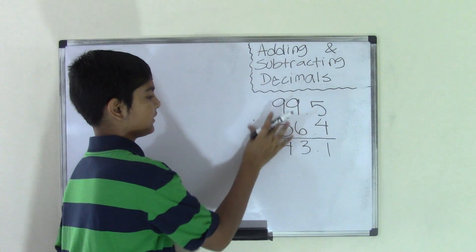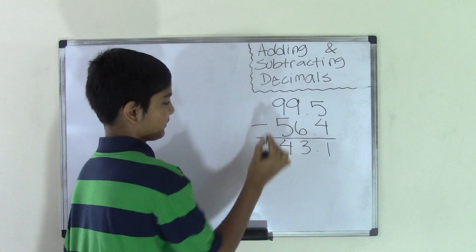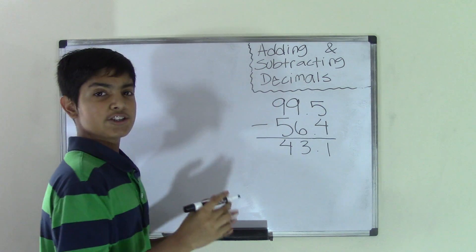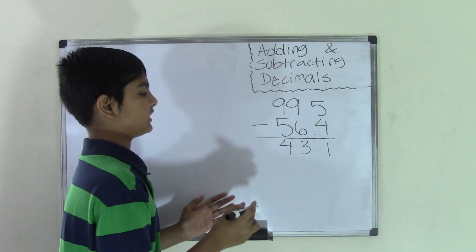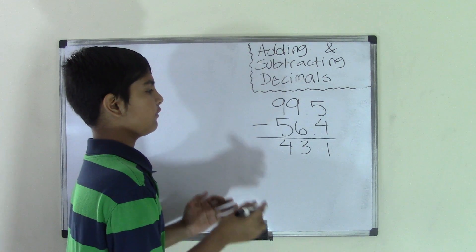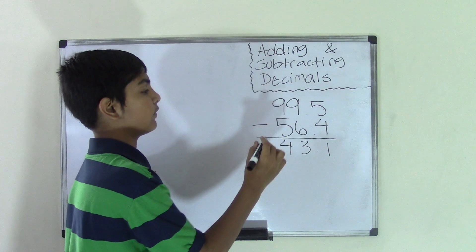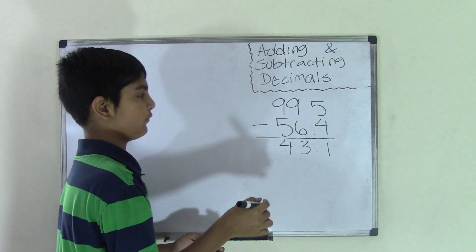And I'm sorry, I put the addition sign over here. It should be the subtracting sign. I'm sorry. So now we have the difference which is 43.1 from subtracting the two numbers, 99.5 and 56.4.